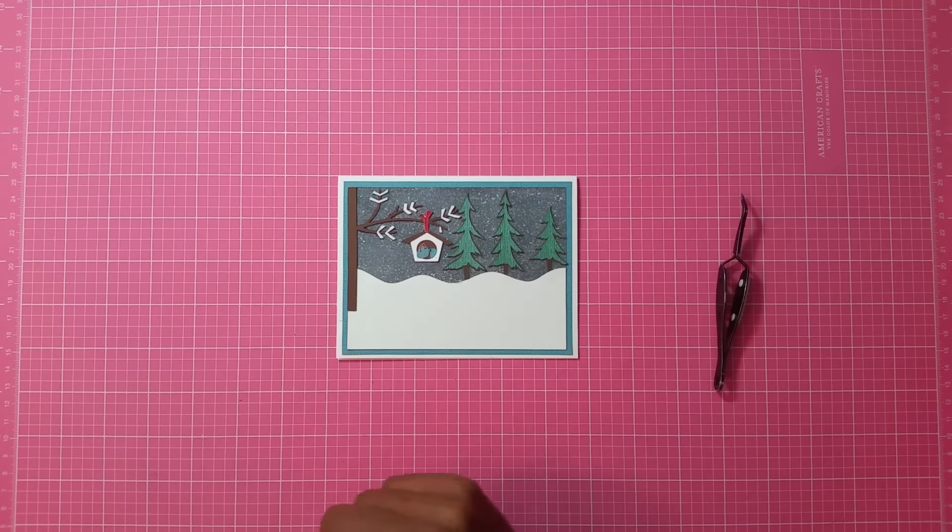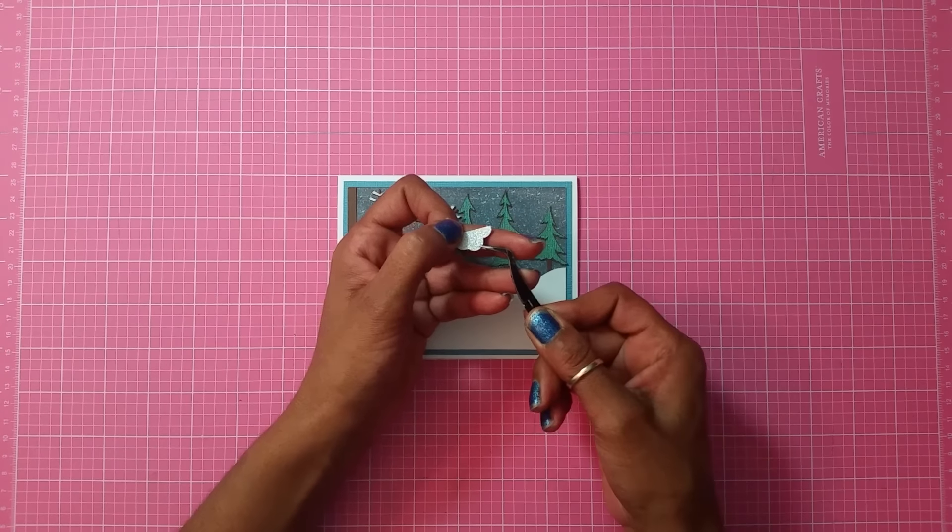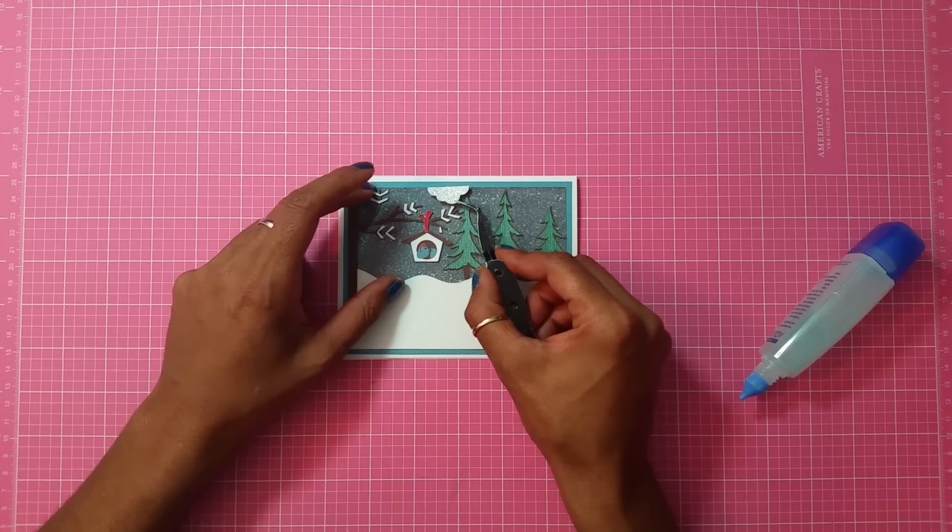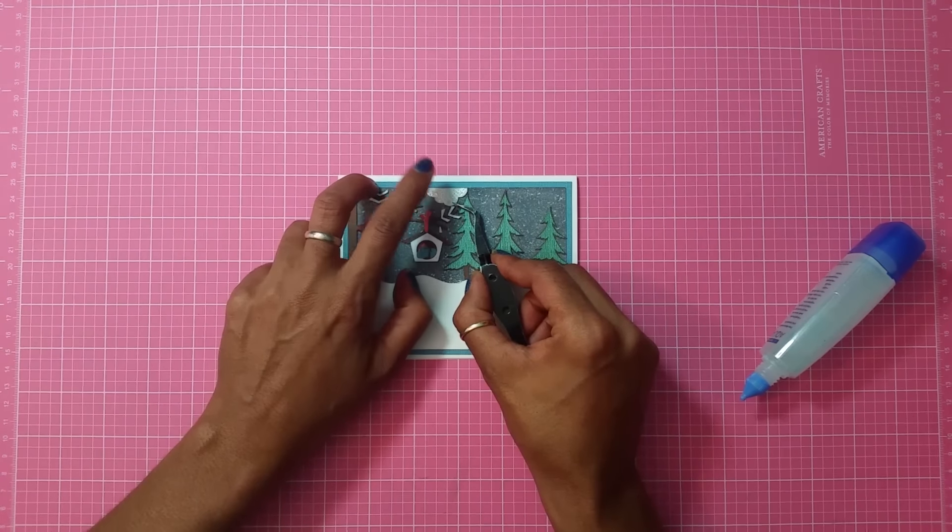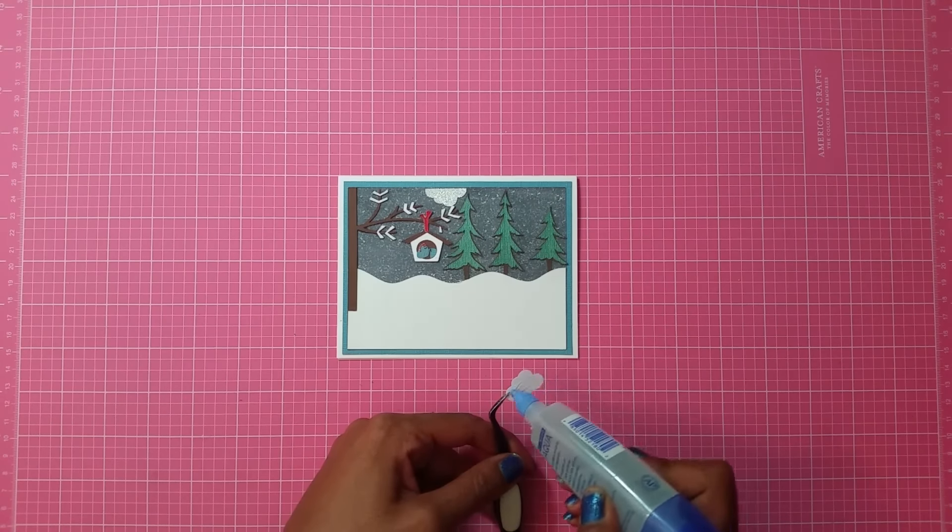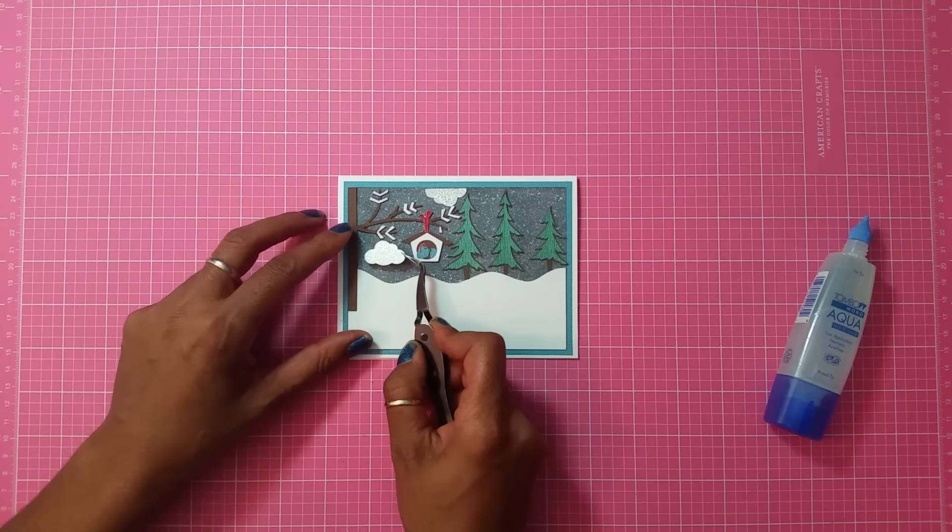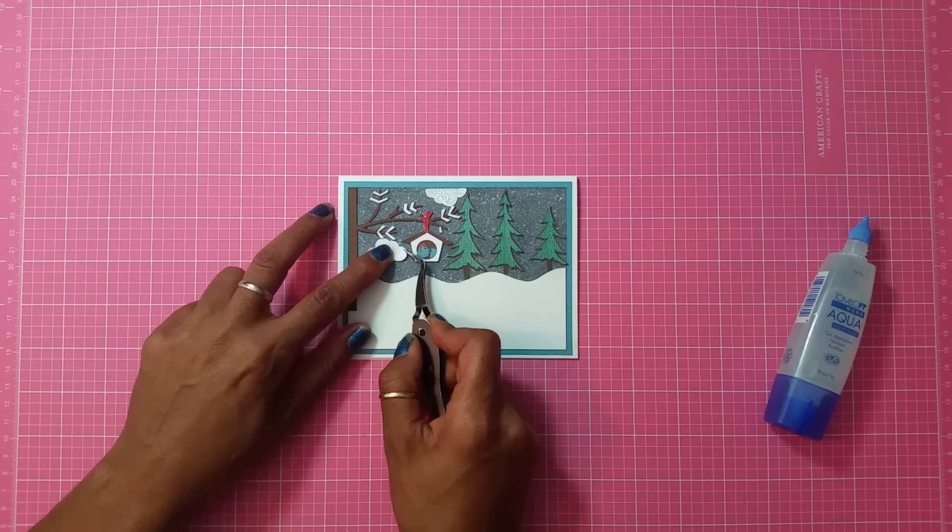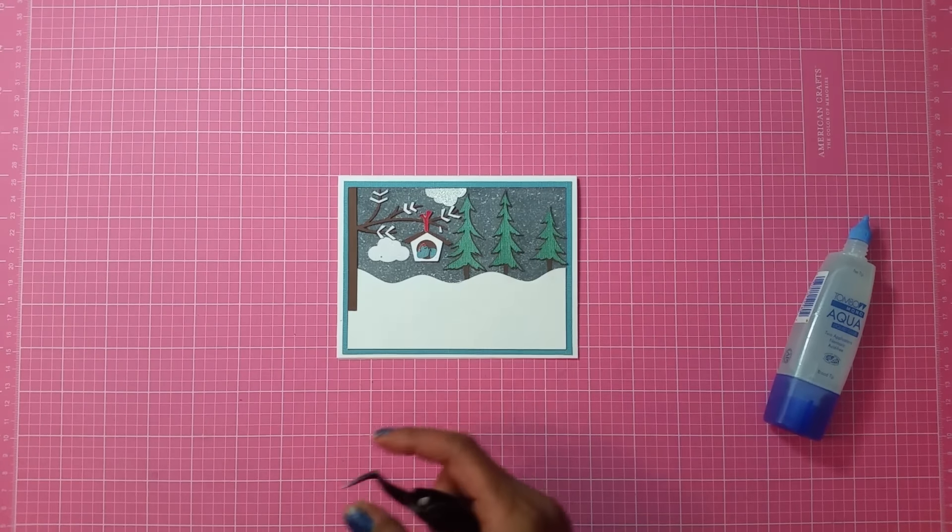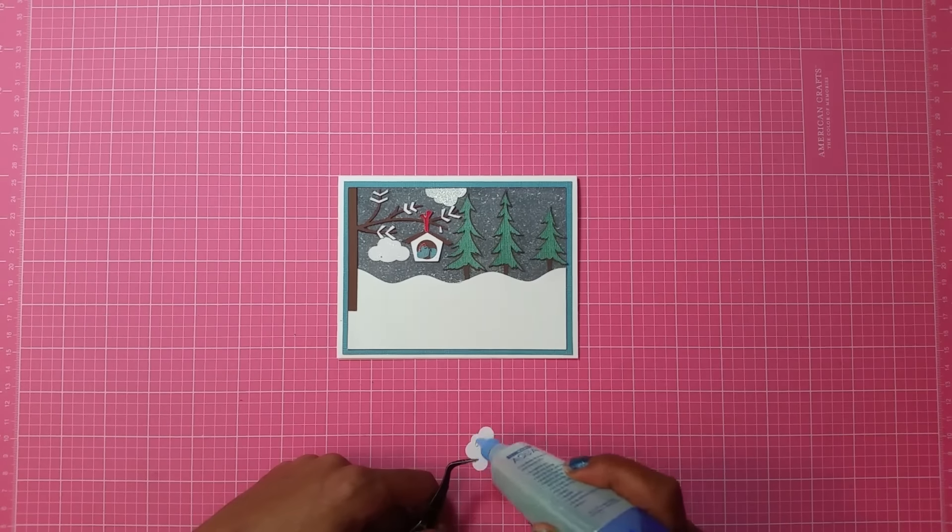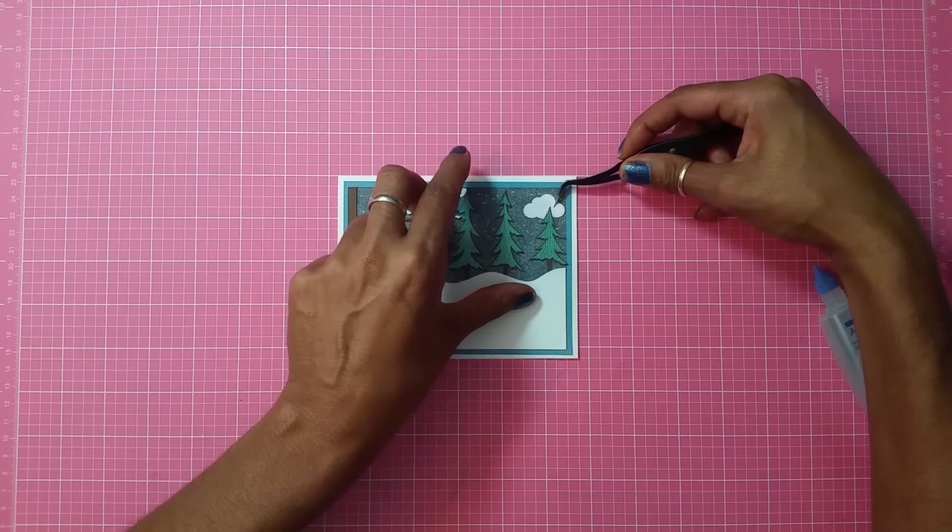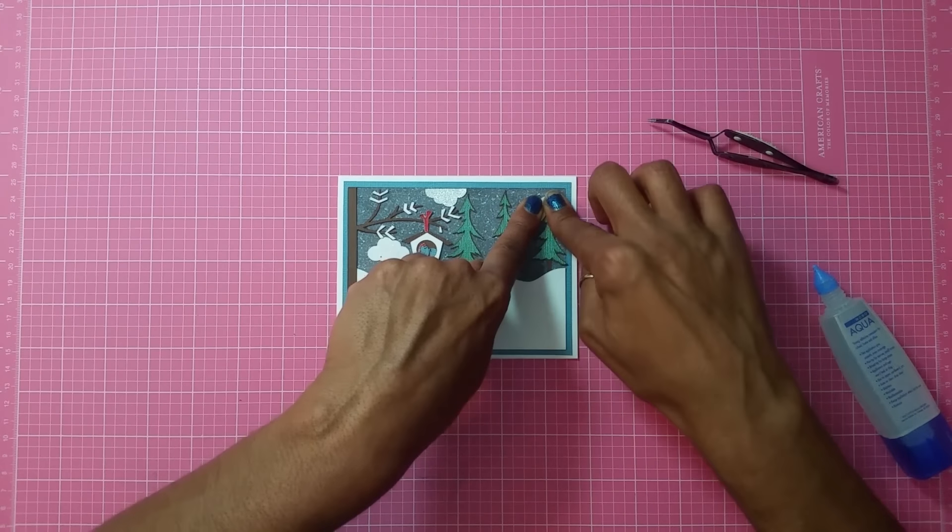So there goes my trees, I got them all in place where I want them. Now I end up using my small cloud punch and I cut out these clouds so now I'm just gonna adhere them where I want them. One's gonna go right up here, and then I cut one out of silver and two out of white glitter. This one's gonna go right under here and then the other one's gonna go on the other side. I want this one to go like behind one of the trees.